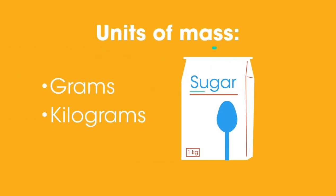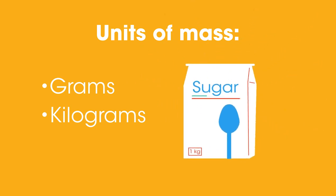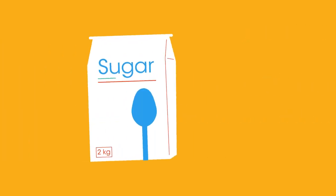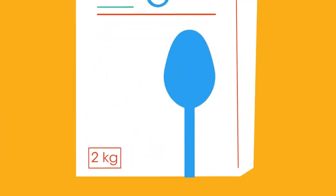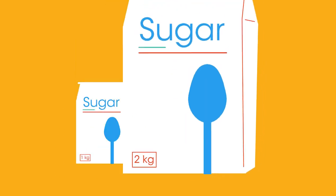Grams and kilograms are units of mass. Mass is a measure of how much stuff is in something. This bag contains twice as much stuff. It has a mass of two kilograms.